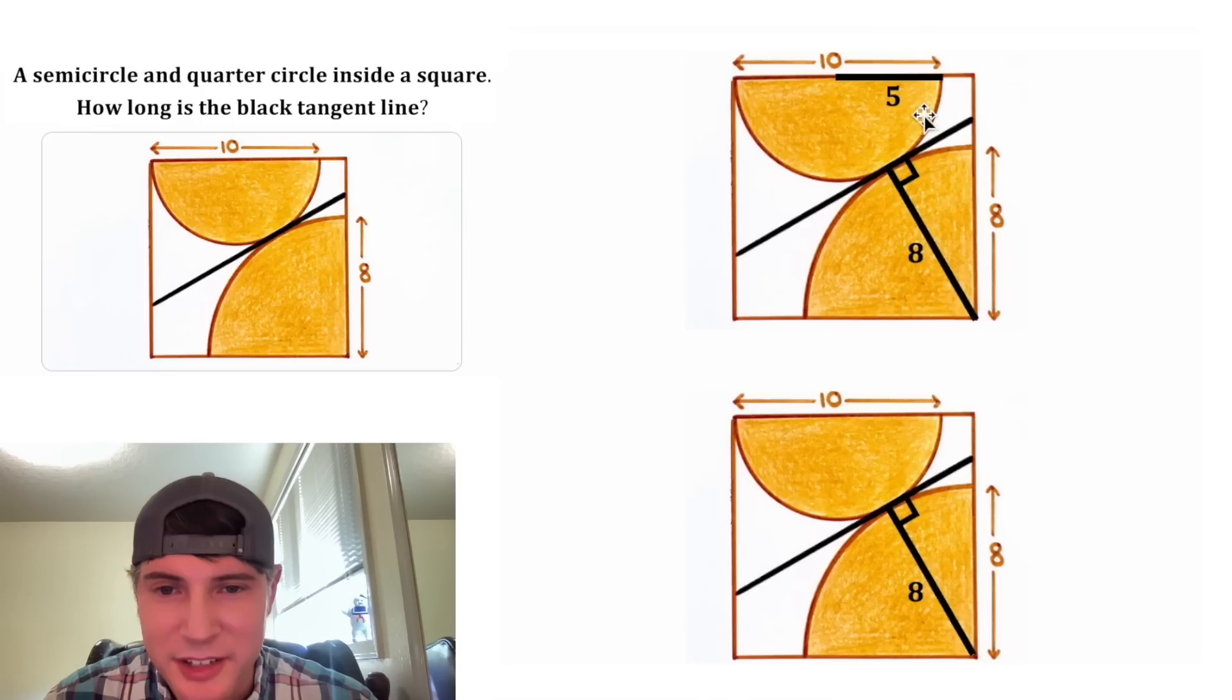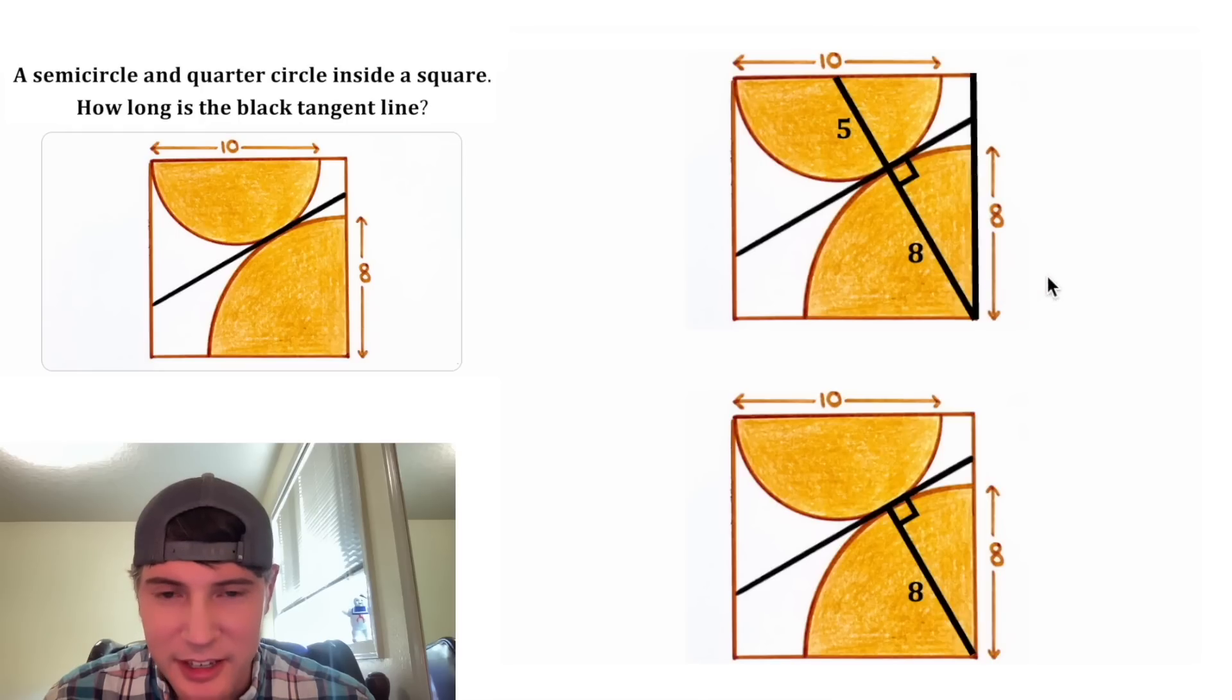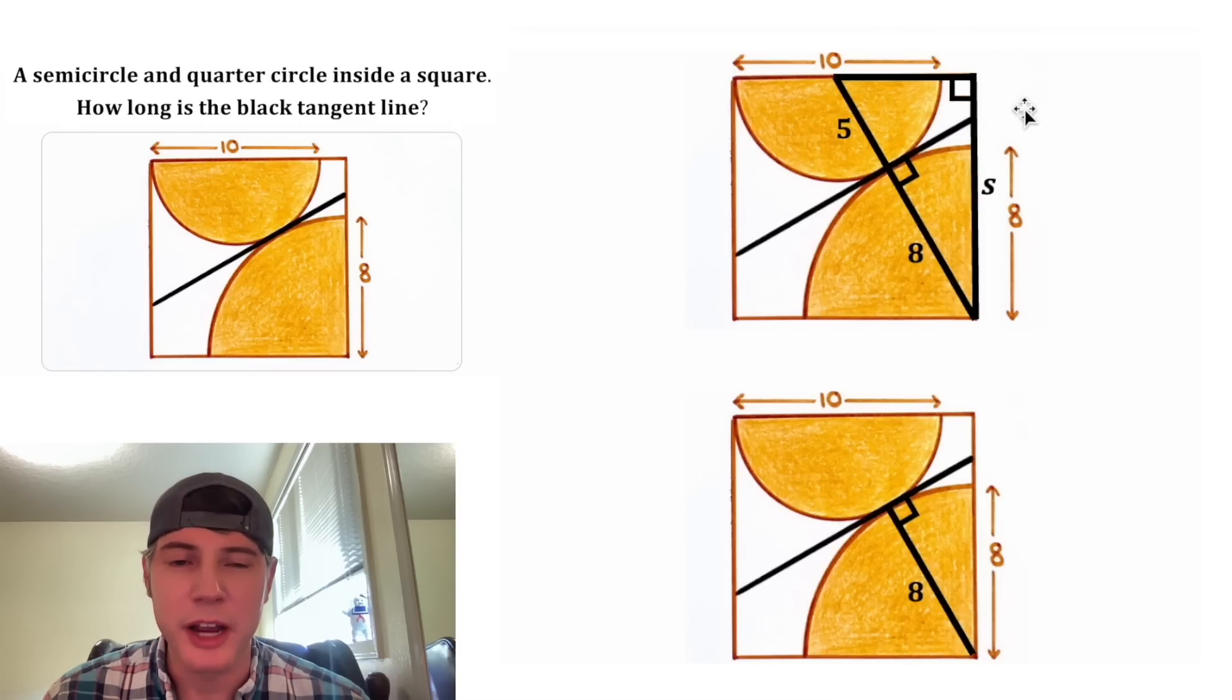For the top one, let's look at the radius of 5, and let's shift it down here. And then let's look at this side length, and let's call that S for side length. And since this is a square, we know both these side lengths are equal to S. And then last, let's complete this triangle, and we know this is a right angle because it's a square. We don't know this angle down here, so let's call it theta.